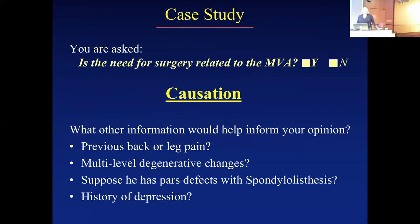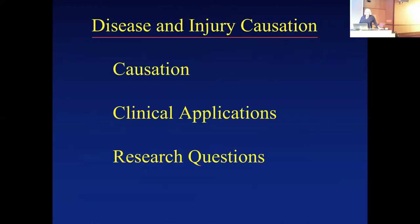What other information would you like to know about this gentleman? Has he had previous leg or back pain? Does he have multi-level degenerative changes? What if he didn't have a disc and all he had was foraminal stenosis? What if he has spondylolisthesis? What if he has a history of depression? How would these changes inform your decision and your answer to this question? This lecture will be divided into three sections: causation, clinical applications for active practicing neurosurgeons, and research questions arising from this information.